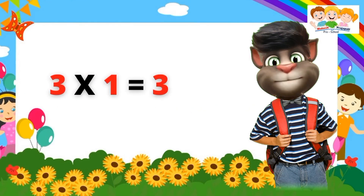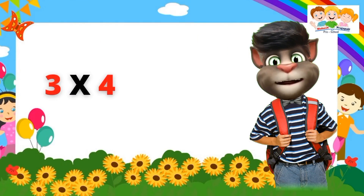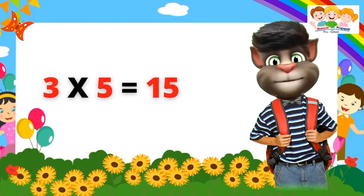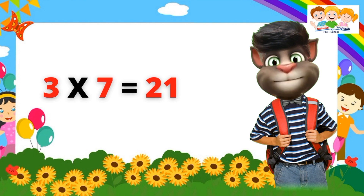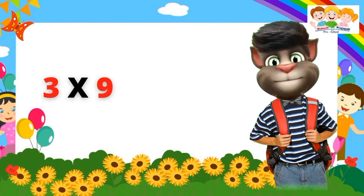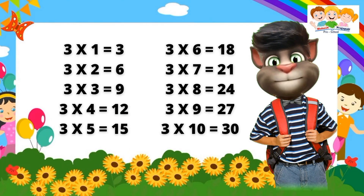Table of Three. Three one's are three. Three two's are six. Three three's are nine. Three four's are twelve. Three five's are fifteen. Three six's are eighteen. Three seven's are twenty-one. Three eight's are twenty-four.